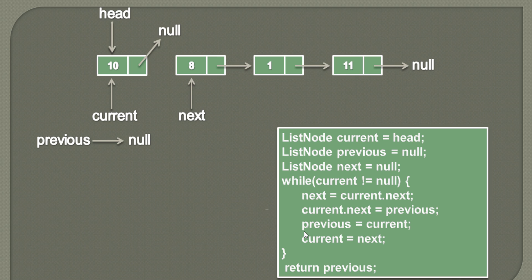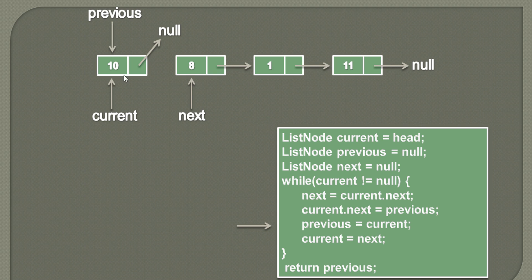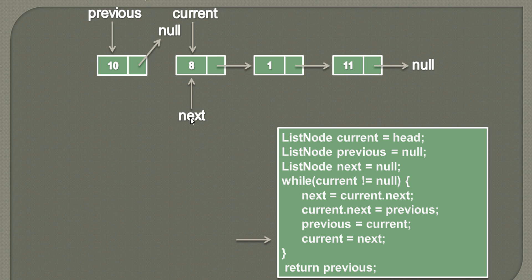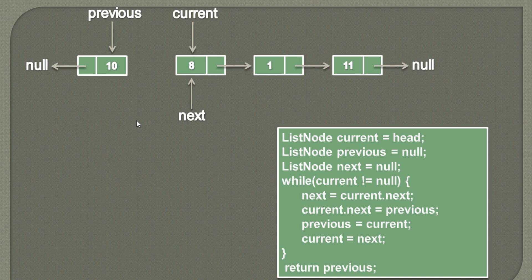Moving ahead, to the previous node we'll assign the value which current holds, so it will point to the first node. Then we'll assign to current whatever value is in next. After the first iteration, if we rearrange the nodes, this is the resulting condition of the first while loop pass.